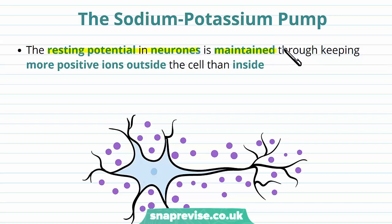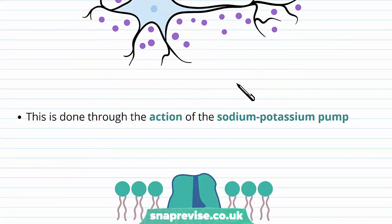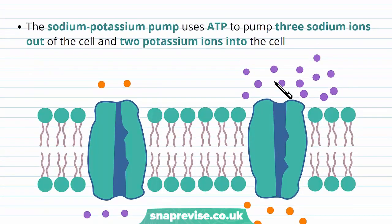The resting potential in neurons is maintained by keeping more positive ions outside the cell compared to inside. At rest, the nerve cell membrane is negative inside and positive outside. Because of this, positives want to come in and negatives want to leave by the forces of attraction. We need something that maintains this — keeping those positives pushed out of the cell so that the outside remains more positive than the inside. This is achieved through the action of a protein called the sodium potassium pump. A pump is a type of protein which uses ATP to pump something against its concentration gradient.